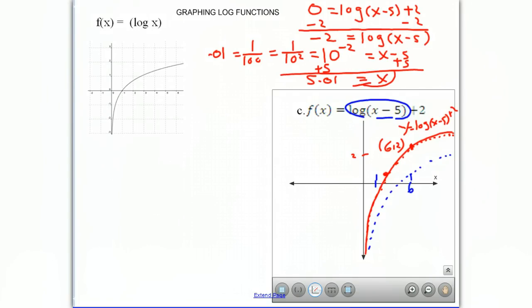So this value right here, this is your x-intercept. So this point right there is 5.01.